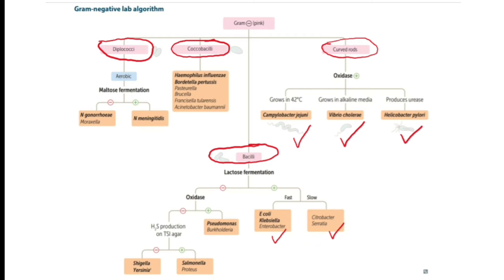Those which cannot ferment lactose can be further classified according to whether they have the enzyme oxidase or not. Oxidase positive includes Pseudomonas, which is very important here. Oxidase negative bacteria can be further classified by whether they can produce hydrogen sulfide.